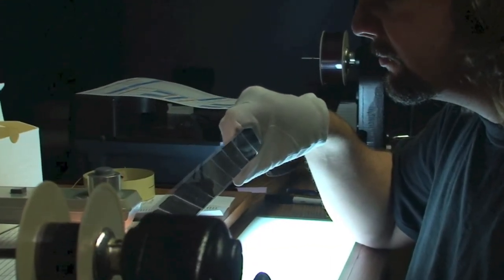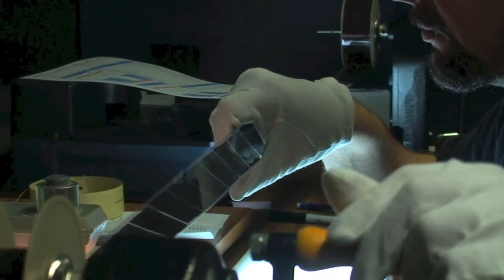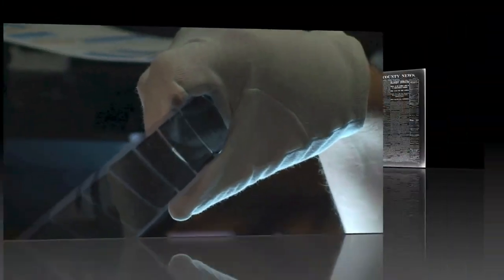Diazo film as a duplicate will maintain the polarity of the master. So if the master is a positive, the dupe will also be a positive. Whereas vesicular film will reverse the polarity, meaning a negative will become a positive.